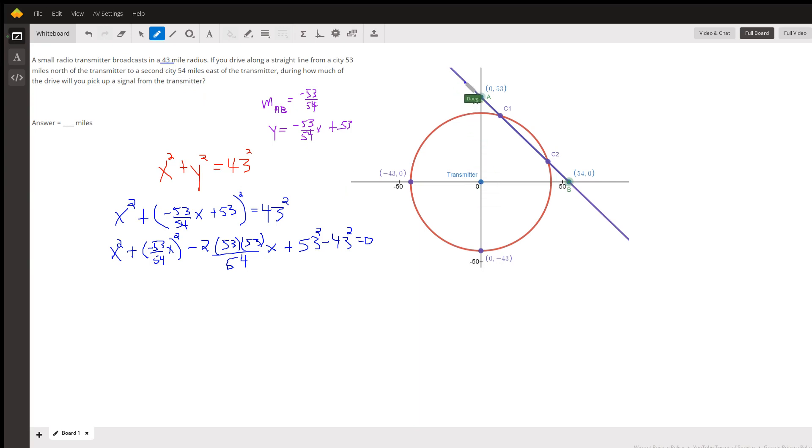The line that the drive follows is from a point 53 miles north of the transmitter to 54 miles east of the transmitter.